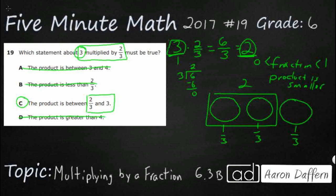If you were to multiply 3 times a decimal, let's do an easy one: 0.5. It's between 0 and 1. We don't want to simply say less than 1, because if it's negative — which is less than 1 — then it's going to be negative. But if you multiply by 0.5, which in fraction form is 1 half, then 0.5 times 3 equals 1.5. So half of 3 is 1.5.